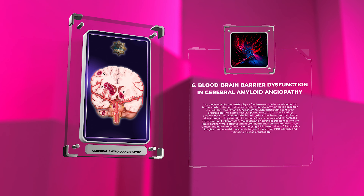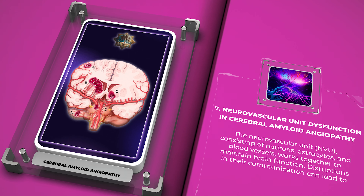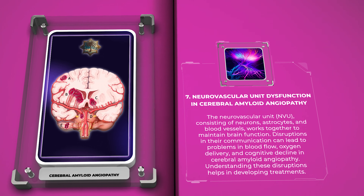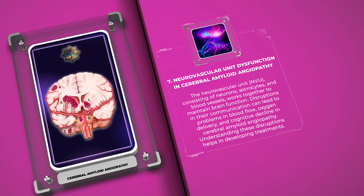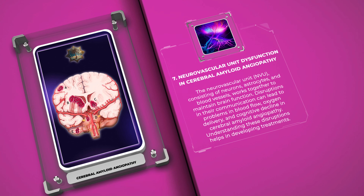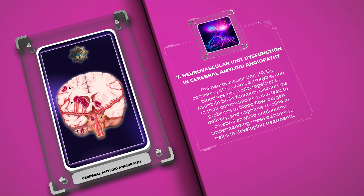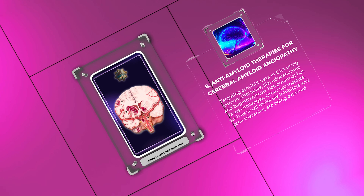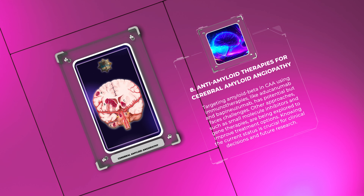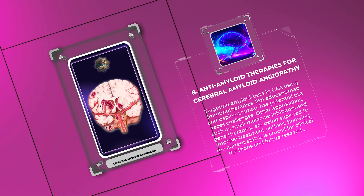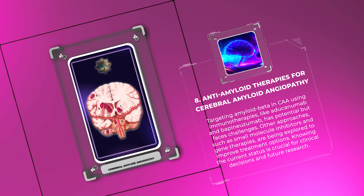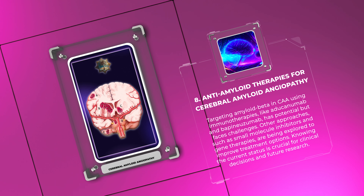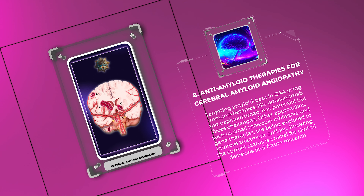The neurovascular unit, NVU, consisting of neurons, astrocytes, and blood vessels, works together to maintain brain function. Disruptions in their communication can lead to problems in blood flow, oxygen delivery, and cognitive decline in cerebral amyloid angiopathy. Understanding these disruptions helps in developing treatments. Targeting amyloid beta in CAA using immunotherapies, like aducanumab and bapinutumab, has potential but faces challenges. Other approaches, such as small molecule inhibitors and gene therapies, are being explored to improve treatment options. Knowing the current status is crucial for clinical decisions and future research.